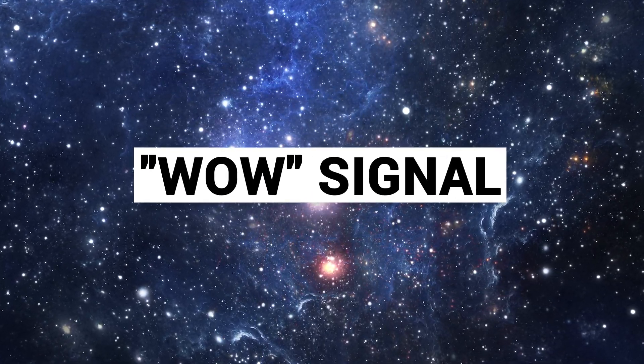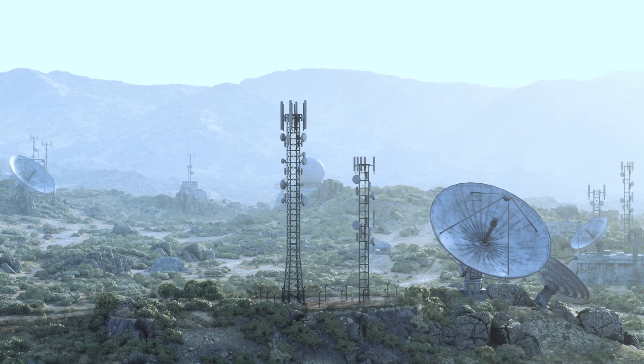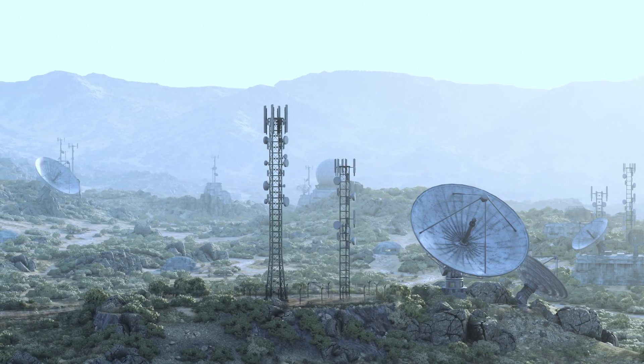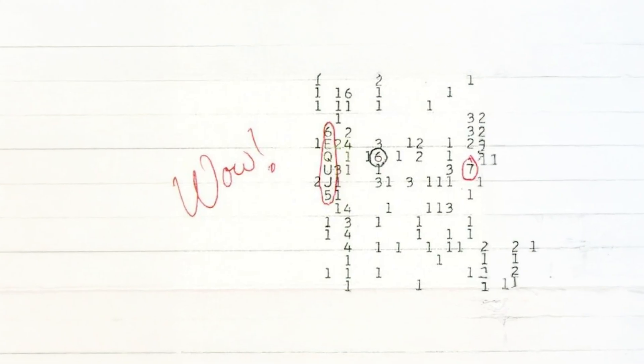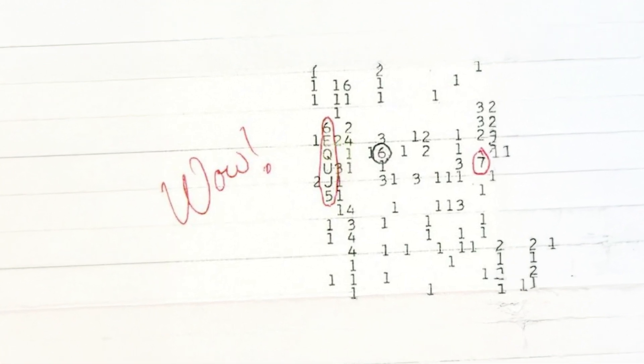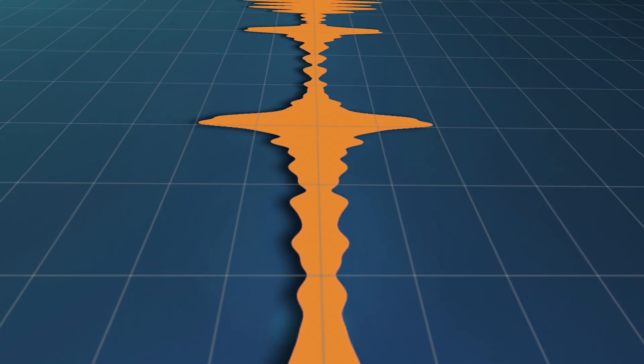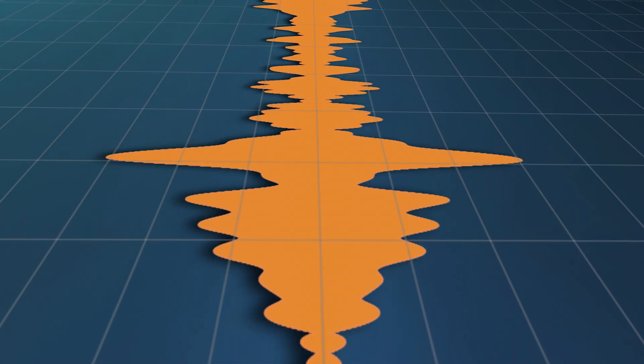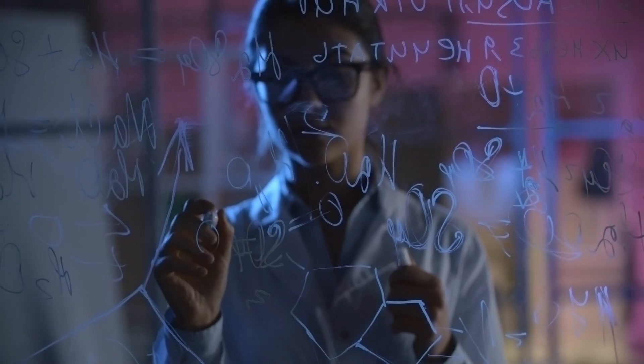The mysterious WOW signal. In 1977, a radio telescope in Ohio picked up an unusual strong signal that seemed to be coming from deep space. Astronomer Jerry Amon circled it on a printout and scribbled WOW beside it, giving it the nickname we know today. Despite years of analysis, we still don't know what caused this WOW signal. Was it a message from intelligent life or just a cosmic fluke? No one knows, but the mystery keeps scientists returning to study it.